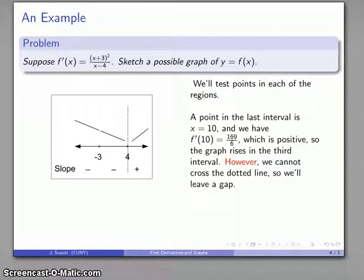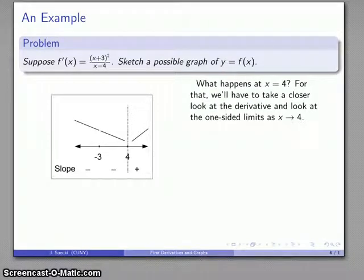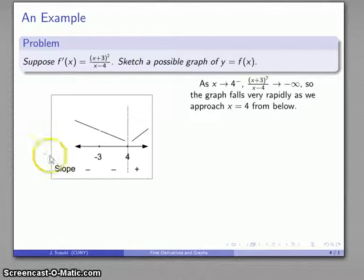Now as a straight line sketch this isn't too bad but we can refine it a little bit. This forbidden line here, something interesting happens there so let's see if we can figure out what's going on. For that we want to take a closer look at the derivative and look at the one-sided limits as x approaches 4. If I'm coming up from below, as x approaches 4 from below the derivative is going to approach negative infinity.